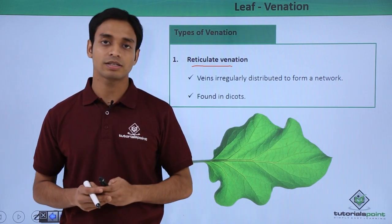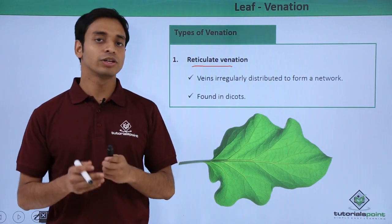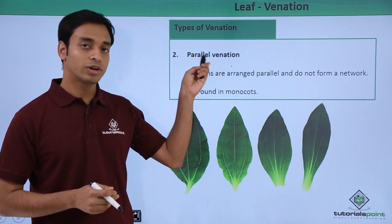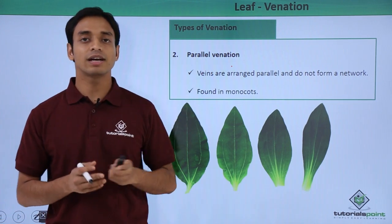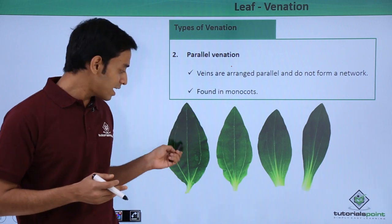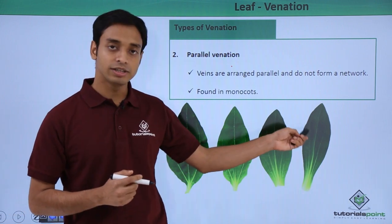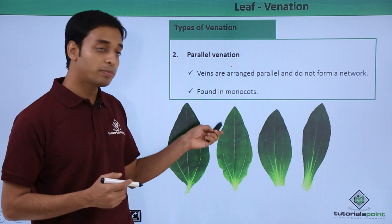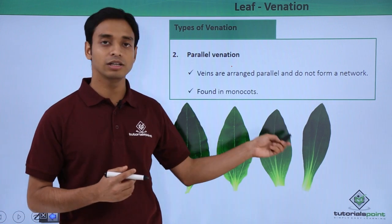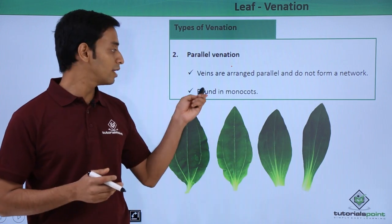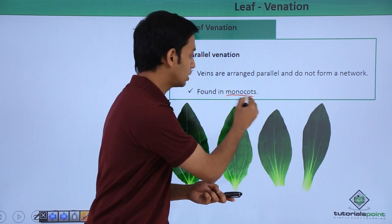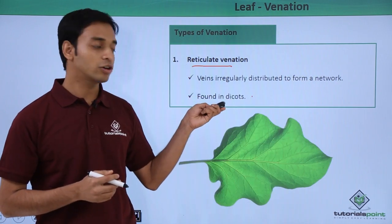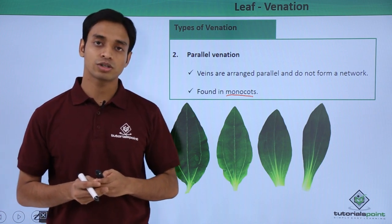Reticulate venation is mostly found in dicotyledonous plants. The second type is known as parallel venation. From the name we can understand that the veins are arranged parallelly. As seen in the picture, the veins are arranged in a proper pattern and are mostly parallel to each other. This type of venation is mostly found in monocotyledonous plants, unlike reticulate venation which is found in dicots.